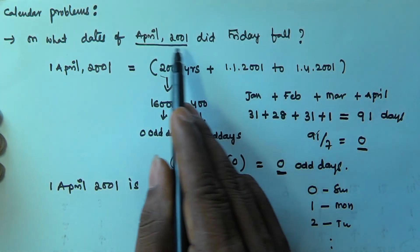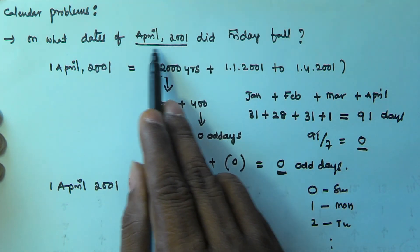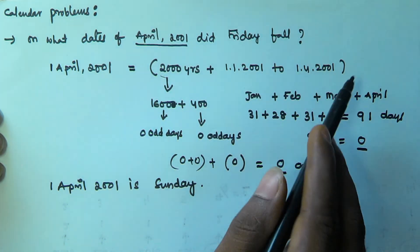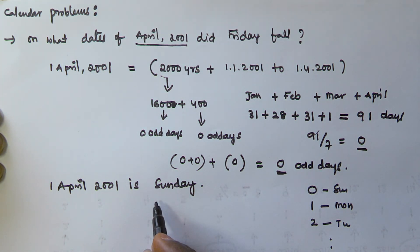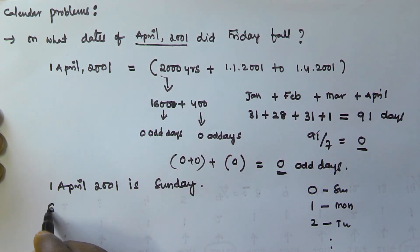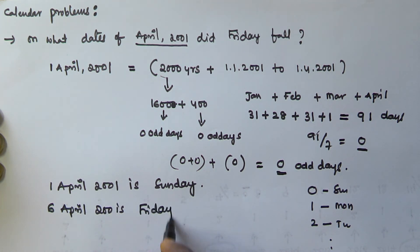Now we have to find on what dates of April 2001 Friday fell. Since 1st April 2001 is Sunday, Friday will come 5 days later. So 6th April 2001 is Friday.